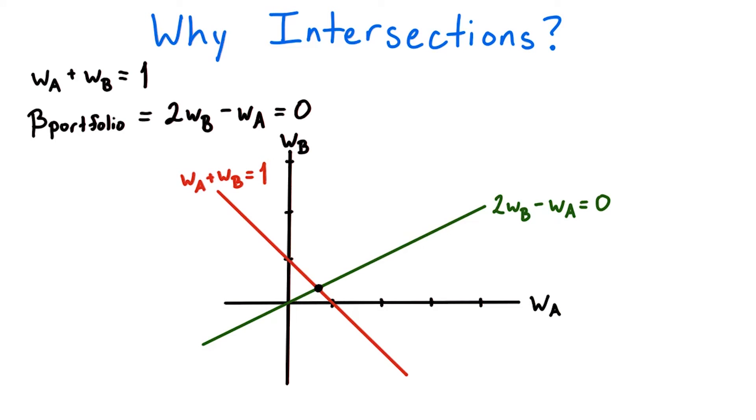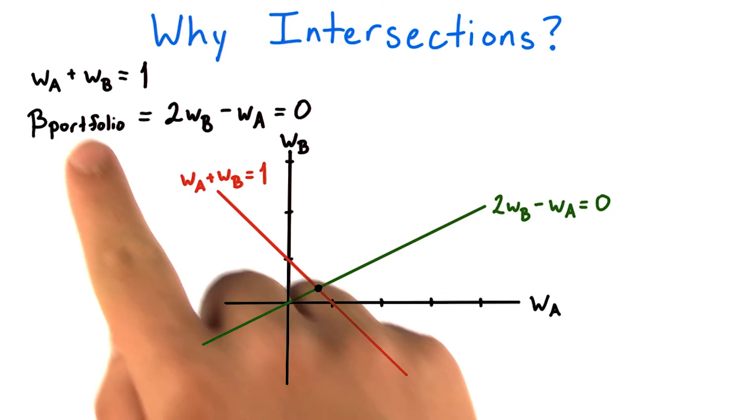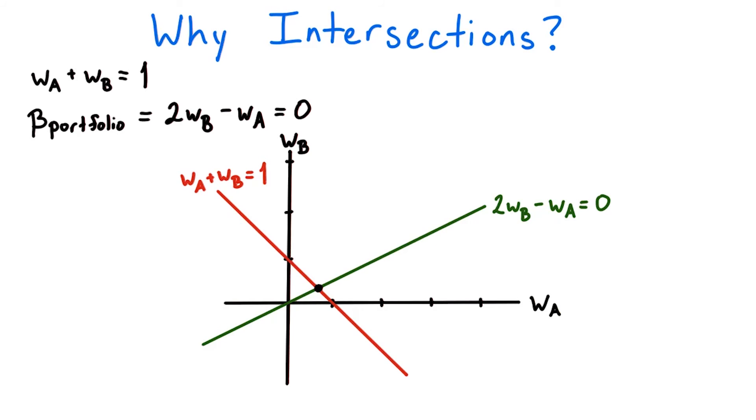In other words, I now have two lines. Finding what values of W_A and W_B satisfy both equations—in other words, finding at what point the two lines intersect—tells me what the weights of the stocks I choose should be in order to minimize my portfolio's market risk.